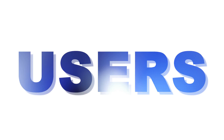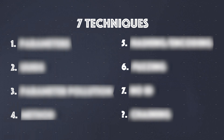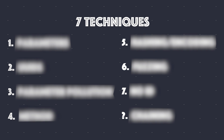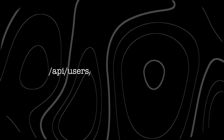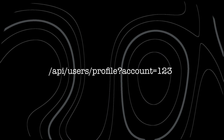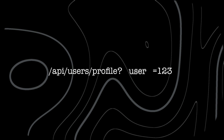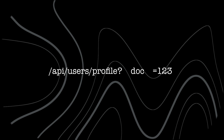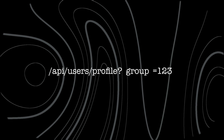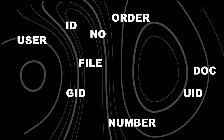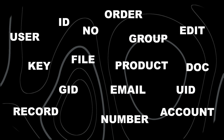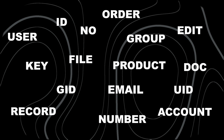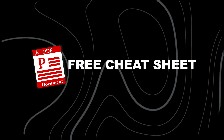Now let's dive into the practical side of things. I will show you seven techniques on how to hunt for IDORs. First, knowing what to look for is the most critical part. The parameters in a URL or API request can often give away potential vulnerabilities. Here are the top parameters you should look out for when hunting for IDORs. Don't worry about jotting these down — everything we cover will be provided in the free cheat sheet at the end of this video.